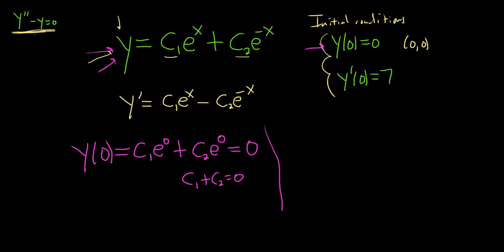All right, let's use our other condition, this one here. This one applies to the derivative. So y prime of 0 is equal to c1 e to the 0 minus c2 e to the 0, doing it here. And that's equal to the number 7. e to the 0 is 1, so we get c1 minus c2 equals 7.